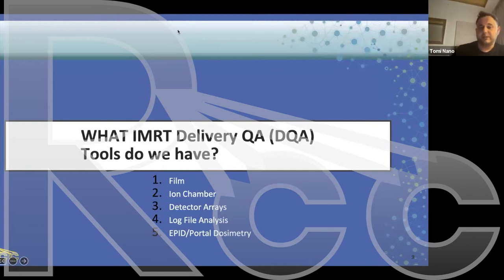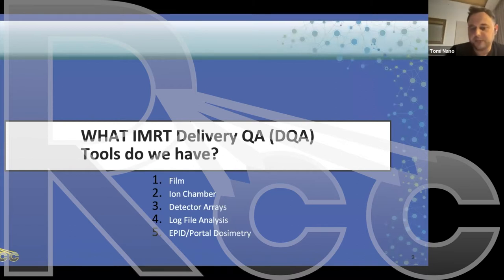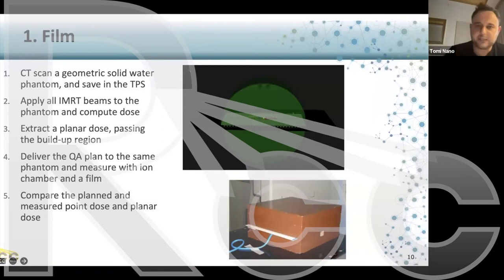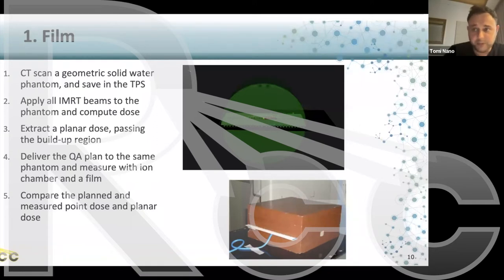In the next section, we'll talk about the devices we use — film, ion chamber, detector arrays, log file analysis, and EPID or portal dosimetry. Film is very useful and still used in clinics quite frequently, in particular for challenging cases when IMRT fails with other devices.